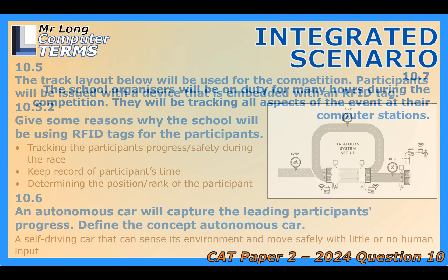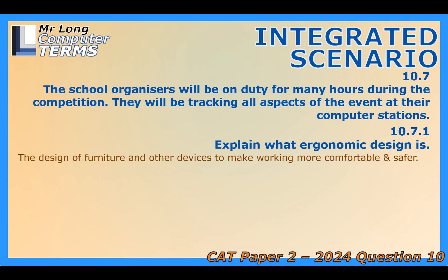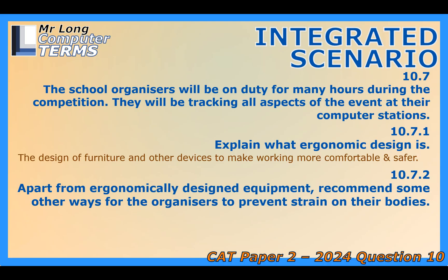Let's swing back to the nerve center — the control room where organizers are glued to screens for hours. Ergonomics comes up. People under pressure might grab any chair and skip breaks. Ergonomics is all about designing the workspace, the furniture, and the computer setup to make working more comfortable and, crucially, safer — fitting the job to the person to reduce strain and fatigue. If the person monitoring the screens is tired and uncomfortable, they're way more likely to make mistakes — miss a critical alert from a safety sensor, or misinterpret timing data. Fatigue leads to errors, and errors can corrupt your data or lead to bad decisions.